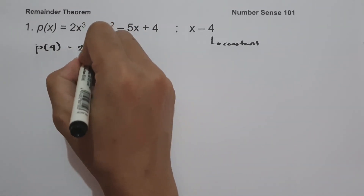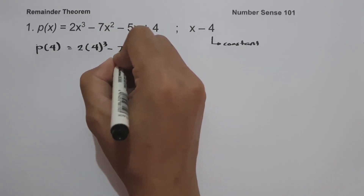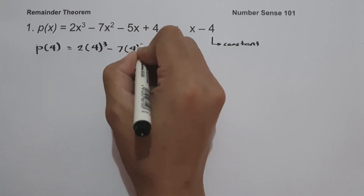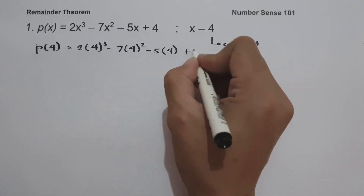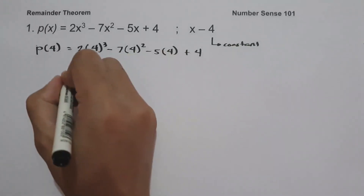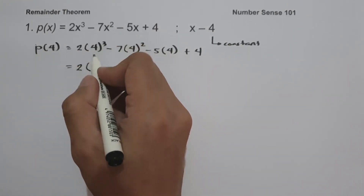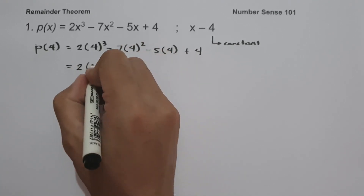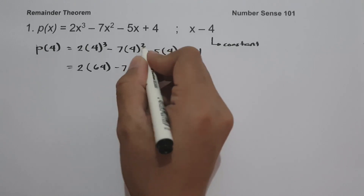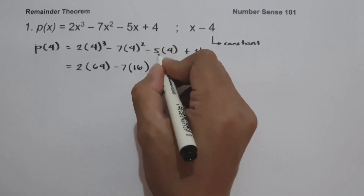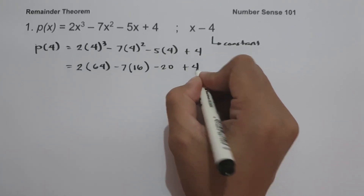So we have 2 multiplied by 4 raised to 3, minus 7 times 4 squared, minus 5 times 4, then plus 4. Let us simplify: 4 raised to 3 is 4 times 4 times 4, that is 64. Then 4 squared is 16. And negative 5 times 4 is negative 20, plus 4.